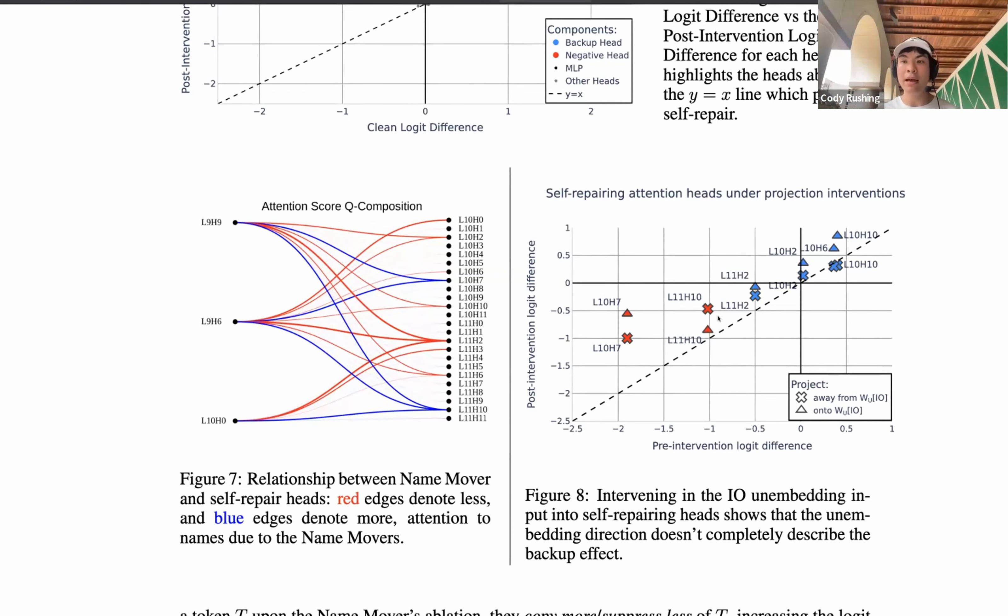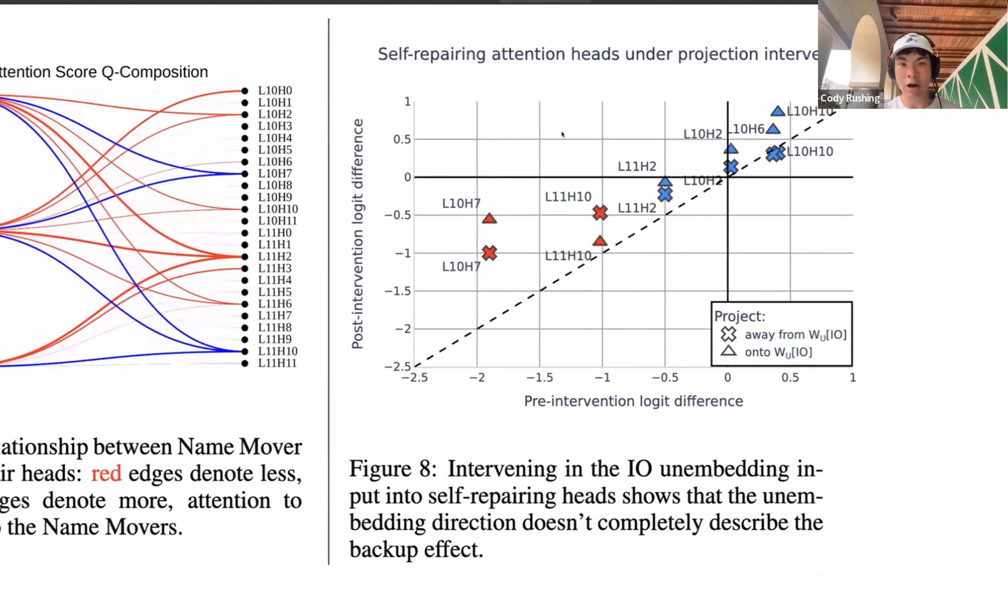So like for here, we find that this distance from the bottom of y equals x to layer 10 head 7 is 39% of all of the distances of all of these heads to the y equals x line, meaning that like any total change of logit differences, layer 10 head 7 accounts for 39% of all this change, which is a pretty non-trivial contribution to like all of self-repair. Awesome. 4.2, why is the story more complex? The story is indeed more complex because we were hoping that this unembedding direction could help explain self-repair in both negative and the backup heads. But it turns out that the unembedding direction is really only important in the negative heads, in these copy suppression heads, as we have discussed extensively in section 2.